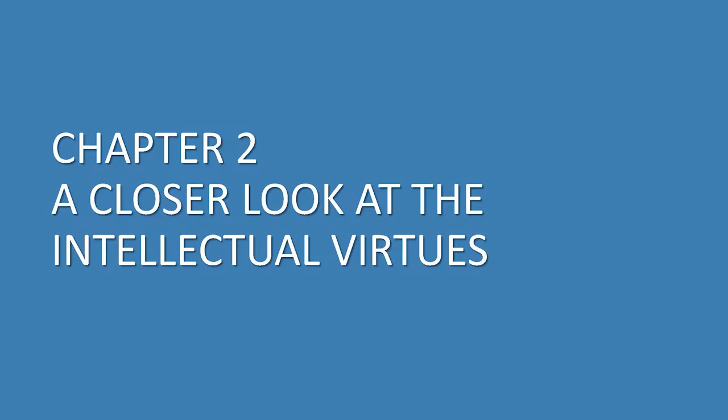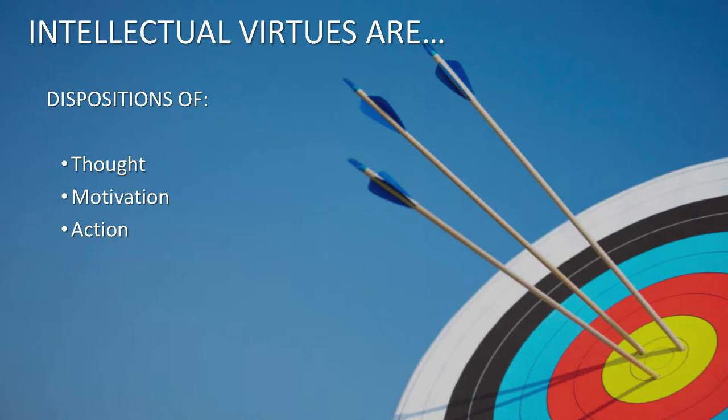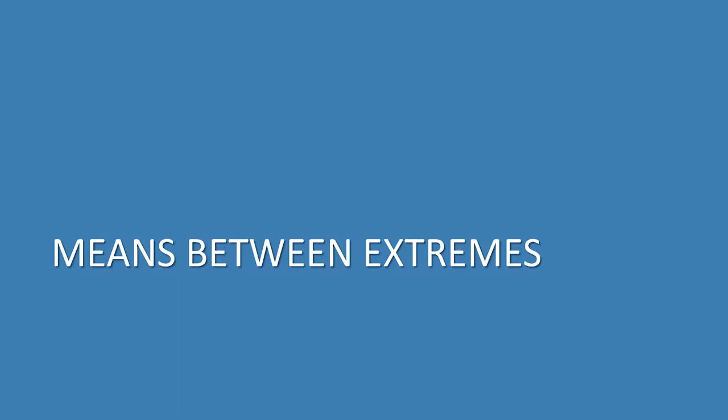In chapter two, I provide more detail about what these intellectual virtues are. So having shown that they're important — what are they? First, they're dispositions — multifaceted dispositions involving our thoughts, motivations, and actions. An intellectually virtuous thinker believes that knowledge and truth are valuable, that falsehood and irrationality should be avoided. She's motivated to pursue knowledge and to avoid falsehood. And that motivation issues in actions for the sake of truth and knowledge.